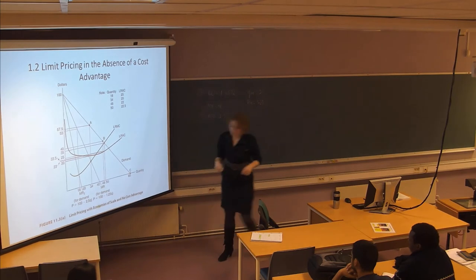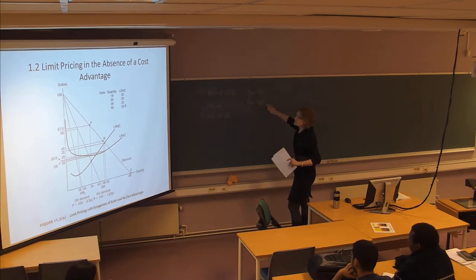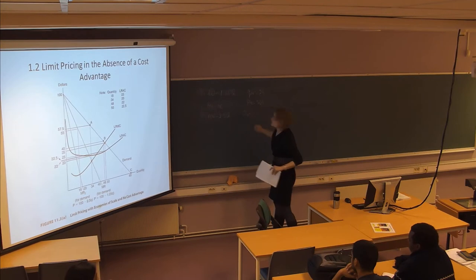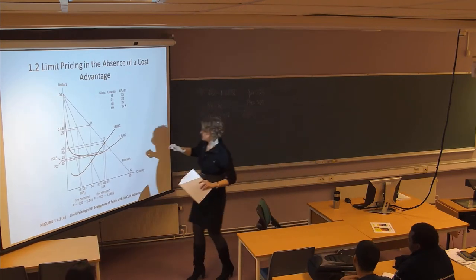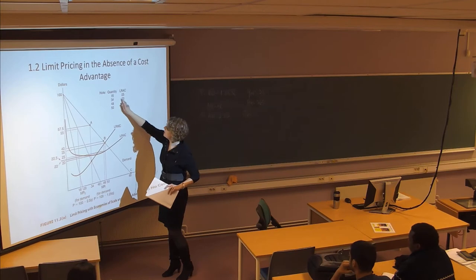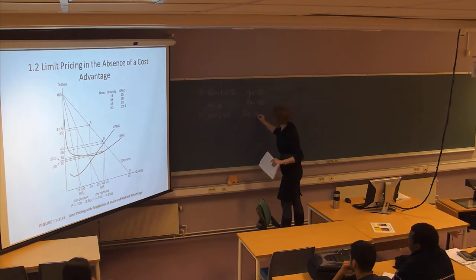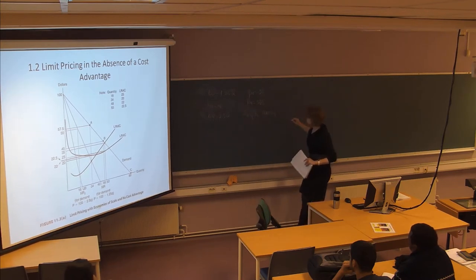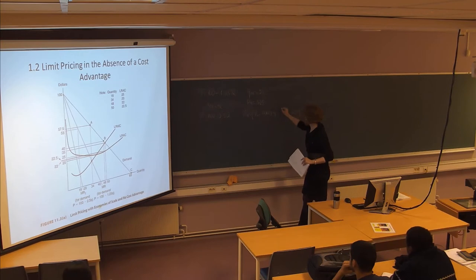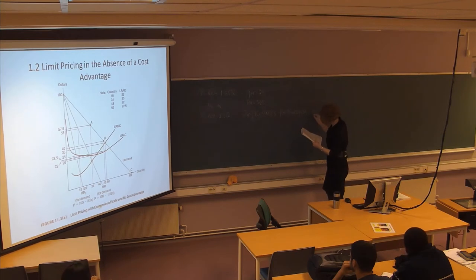In order to understand what is the long-run profit, we have to find the average cost — the cost of producing one unit. So everything between the price and the average cost block is the profit of the firm. We can calculate the profit from this data. If the quantity is 34, the average cost is 20. So profit equals price minus long-run average costs multiplied by Q — this is 57.5 minus 20, multiplied by 34 — which is equal to 1275.